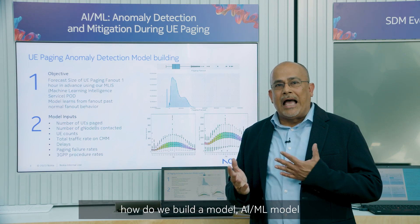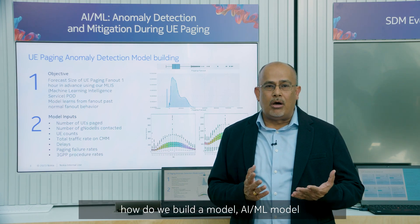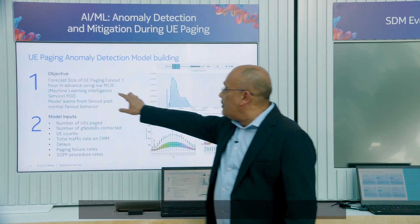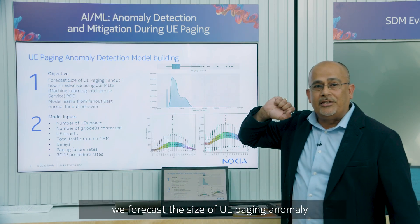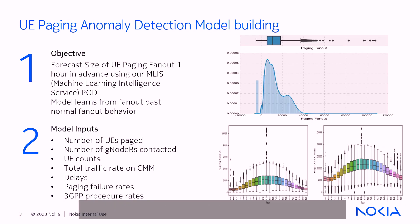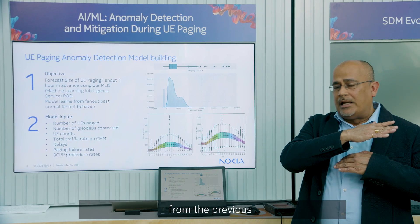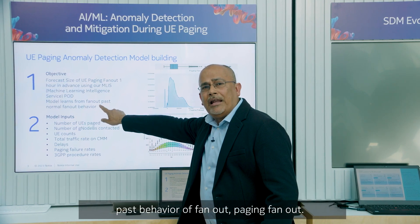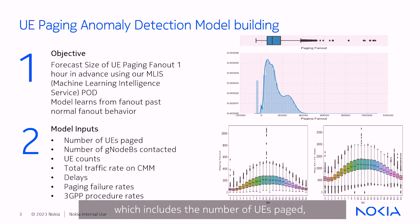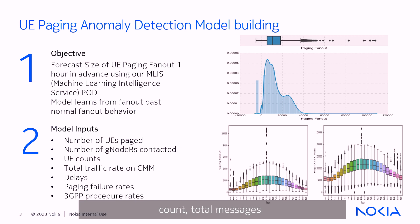How do we build an AIML model that can be used to detect and mitigate these anomalies? Our objective is to forecast the size of UE paging anomaly about an hour into the future. We build a model that learns from the previous past behavior of paging fanout. We use a number of inputs given to the model, which includes the number of UEs paged, number of gNodeBs contacted, UE count, total message rate, delays, and paging failure rate.